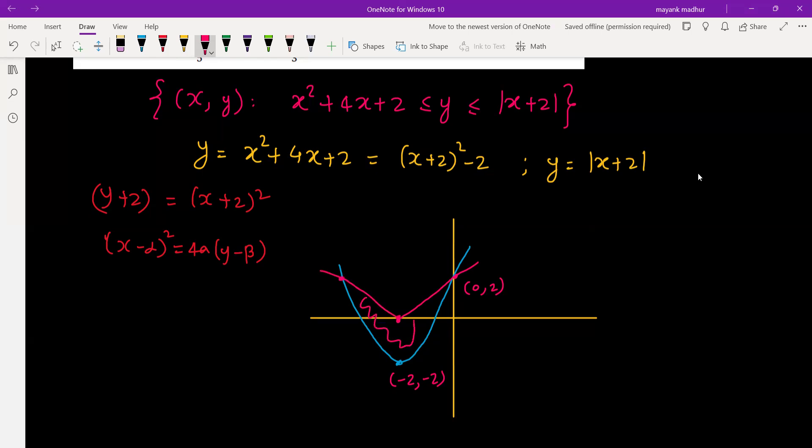We need this area. This is what we want because y is less than or equal to the modulus, so below this mod graph, and y is greater than or equal to the parabola, so above this. We got the x-coordinates as -4 and 0. The points are (-4, 2) and (0, 2), so these two are at the same y-coordinate.